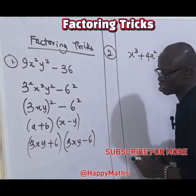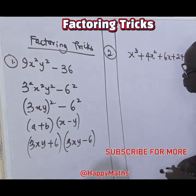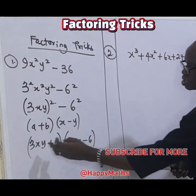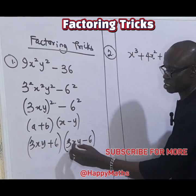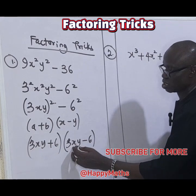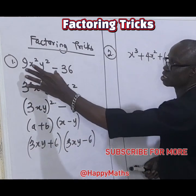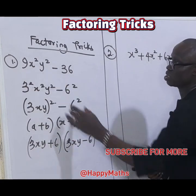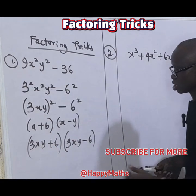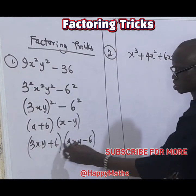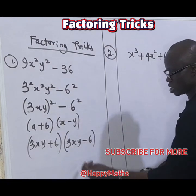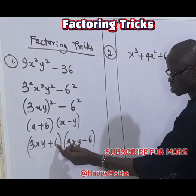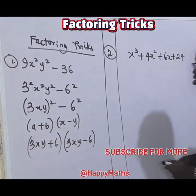This difference of 2 squares is an interesting one. 3sy times 3sy, we get 9s squared y squared. Then positive, negative — we get the negative back. 6 times 6, we get 36.